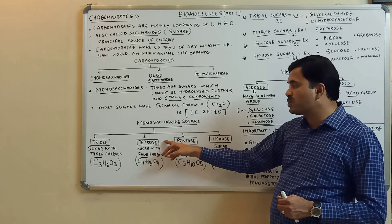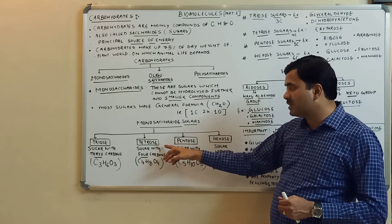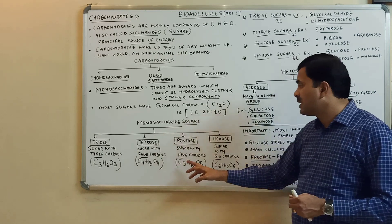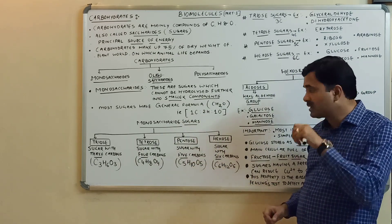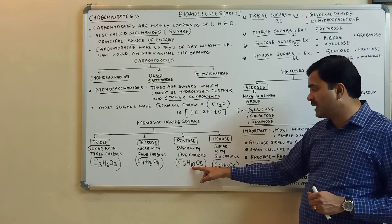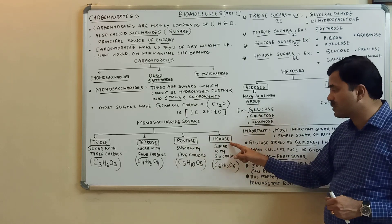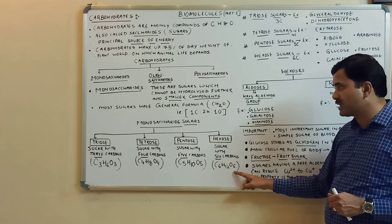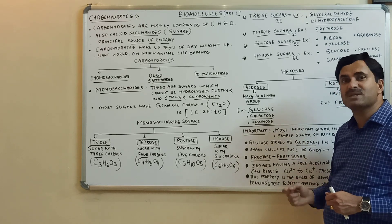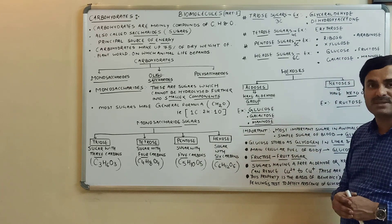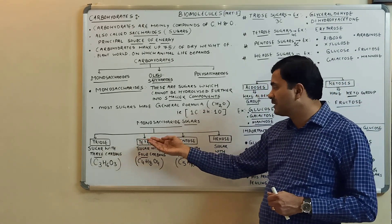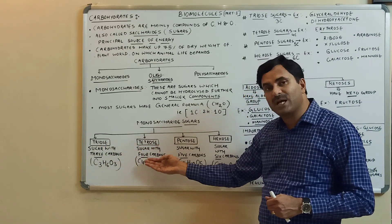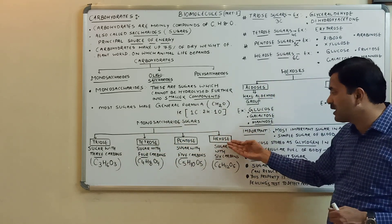Tetrose sugar has four carbons with empirical formula C₄H₈O₄. Pentose sugar has five carbons with formula C₅H₁₀O₅. Hexose sugar has six carbons with formula C₆H₁₂O₆. So based on the number of carbon atoms, monosaccharides are classified as triose, tetrose, pentose, and hexose.